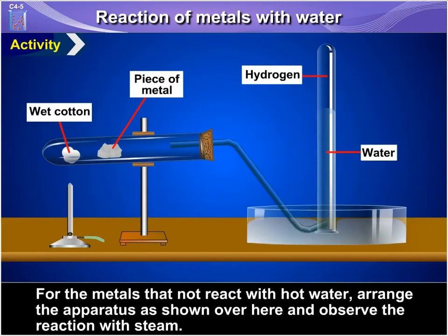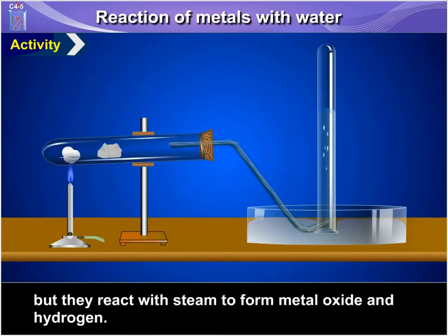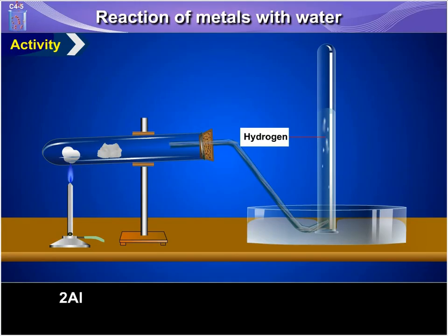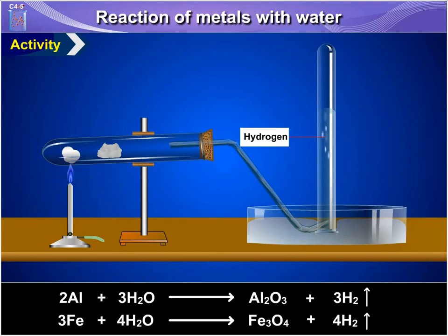For the metals that did not react with hot water, arrange the apparatus and observe the reaction with steam. Metals like aluminium, iron and zinc do not react either with cold or hot water, but they react with steam to form metal oxide and hydrogen. 2Al + 3H₂O → Al₂O₃ + 3H₂ gas. 3Fe + 4H₂O → Fe₃O₄ + 4H₂ gas.